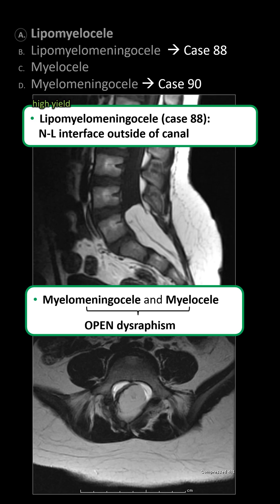Remember, these are different than myelomeningocele or myelocele. Those lesions are open dysraphisms, and they are associated with Chiari 2 malformation. Our lesion, in this case, does not.